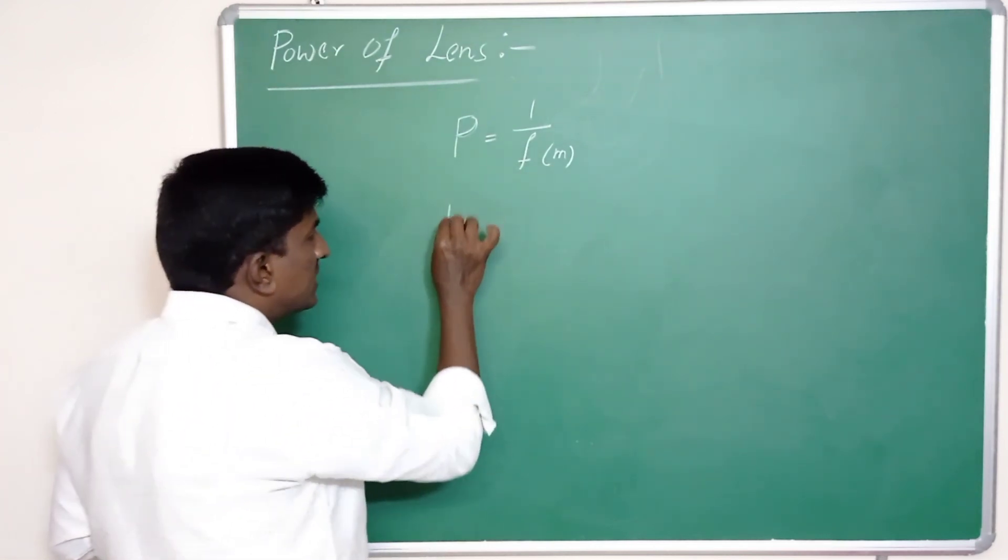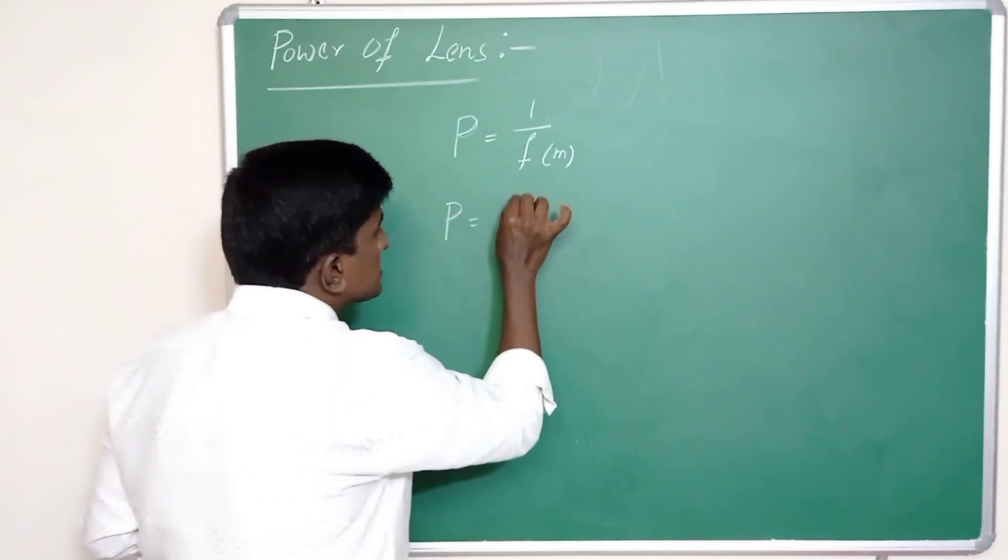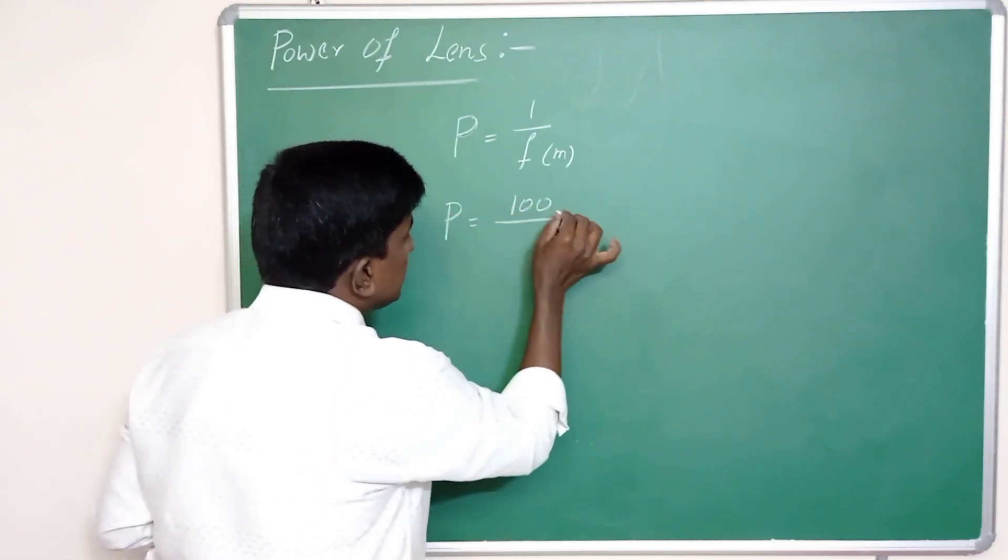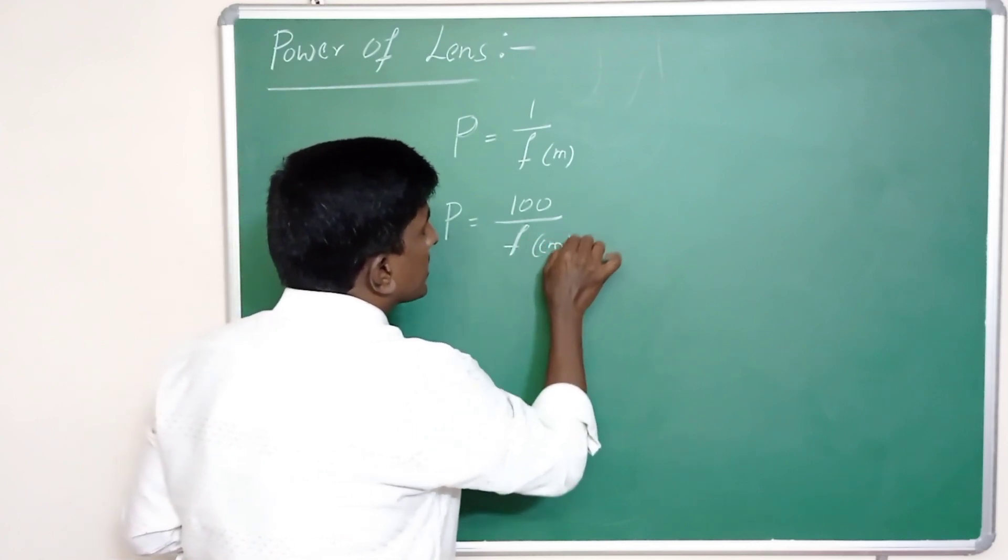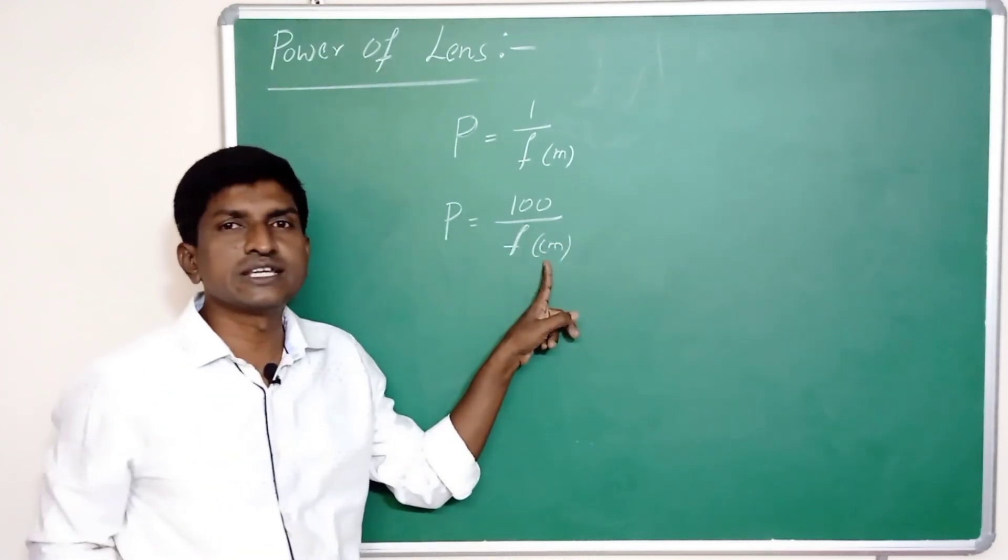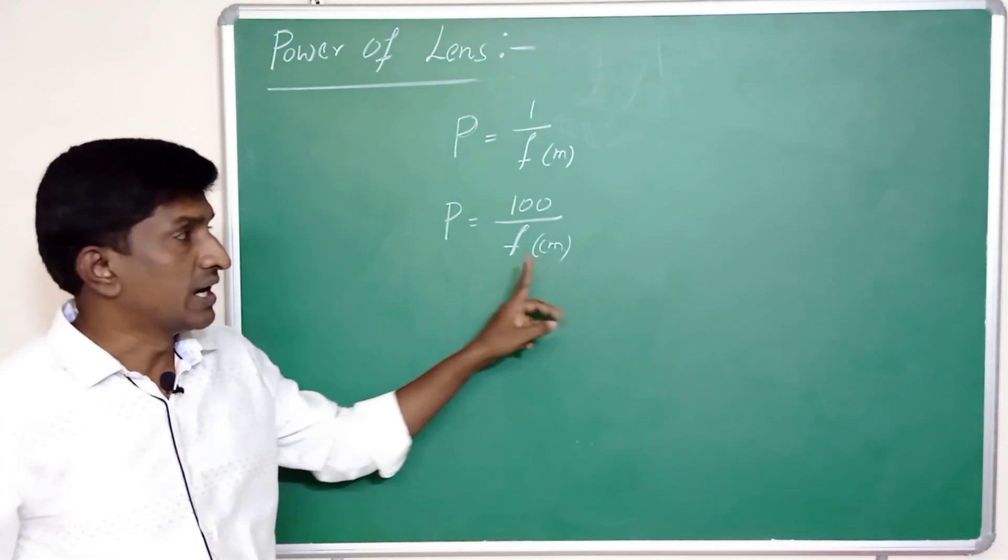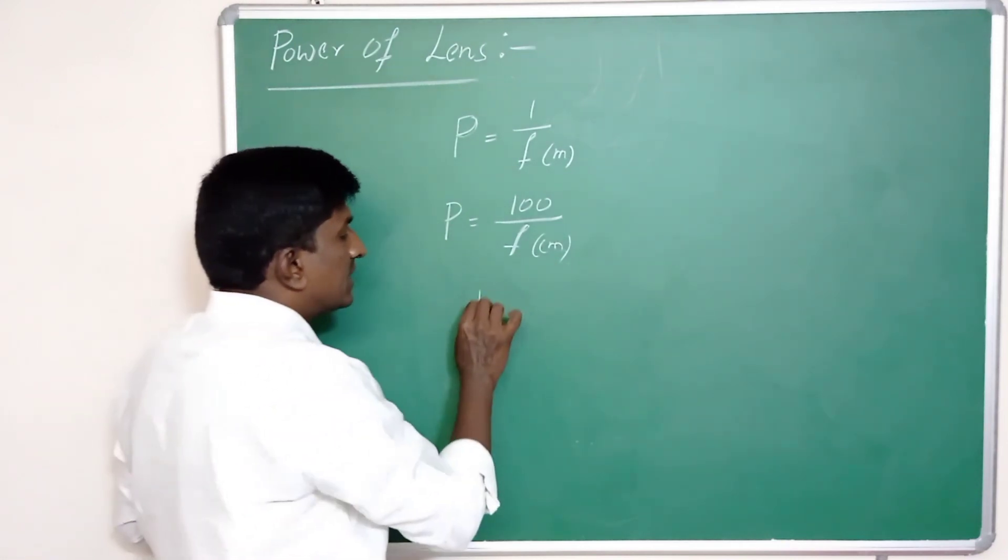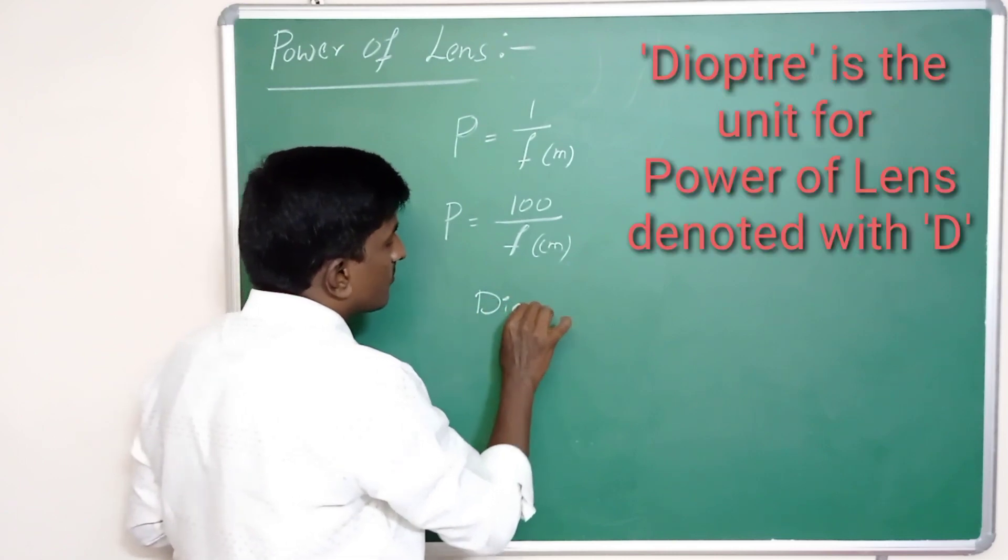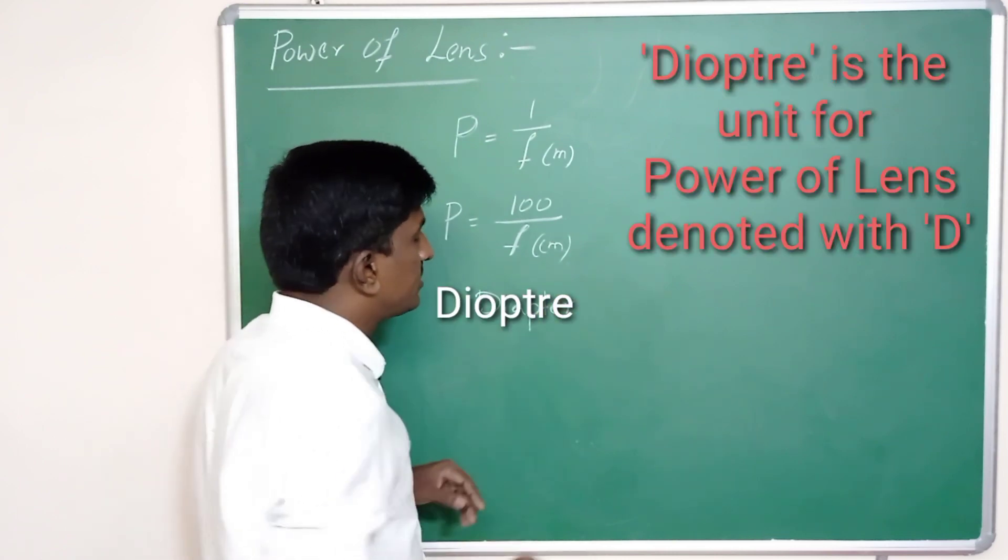If the focal length is measured in centimeters, then power of lens is 100 by focal length, where focal length is in centimeters. The unit for this power of lens is diopter. Diopter is the unit for the power of lens and it is denoted with D.